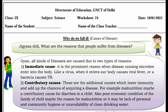Contributory causes. These are additional causes which lower immunity and add up the chances of acquiring a disease. For example, malnutrition may be a contributory cause for diarrhea in a child.